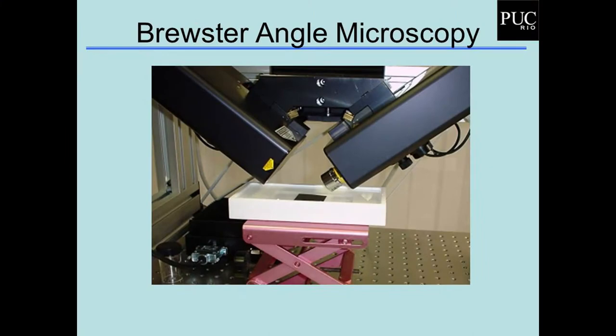Além disso, a gente pode pegar aquele substrato que foi tirado e montado o filme, e utilizar o mesmo microscópio para ver o filme no substrato, não in situ. Esse aqui é um microscópio de ângulo de Brewster no Instituto de Física da USP de São Carlos. Não tem as barreiras nesse caso; você forma o filme e consegue irradiar um laser que bate no filme e reflete. Aqui tem um detector, e a gente consegue tirar fotos bastante interessantes do filme.